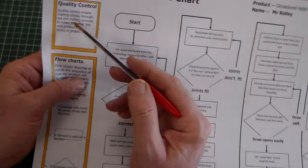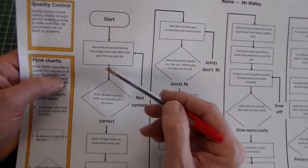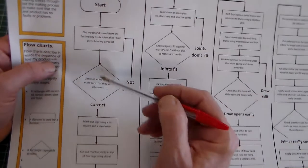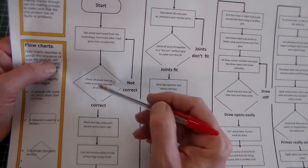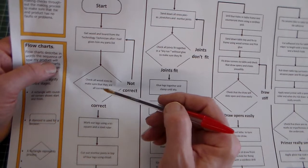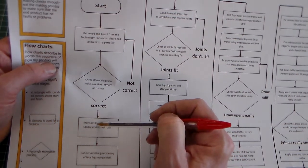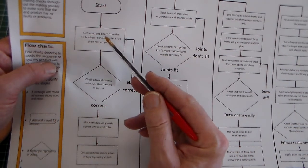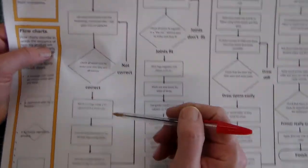By putting in these decisions, we are inserting quality control checks. That is our first quality control check — is the wood the right size? Is everything correct? If yes, we move on. If not, we follow this path, go round, and get the extra or replacement wood that we need.